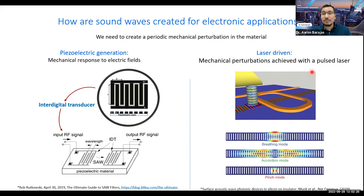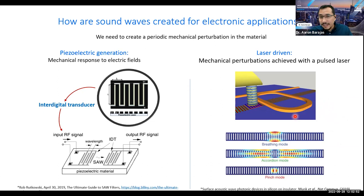The other way of creating high-frequency sound waves involves more state-of-the-art laser-driven methods. The idea is that pulsed lasers are used to create these mechanical perturbations. This can be done in many different ways — some people use gratings to transform the laser pulse into mechanical perturbations, and others use optomechanical crystals — but all of them use pulsed lasers.